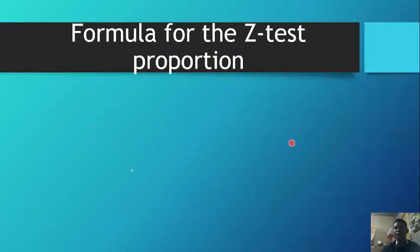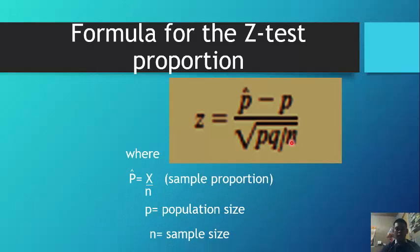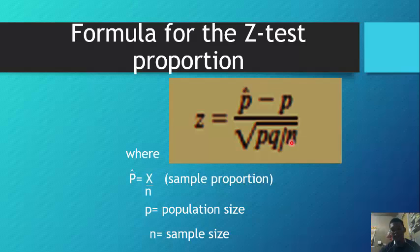The formula for the z-test for proportion is: z equals p-hat minus p, all over the square root of p times q divided by n. Here, p-hat equals x over n as the sample proportion, p is the population proportion, and n is the sample size.